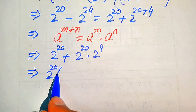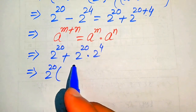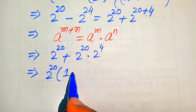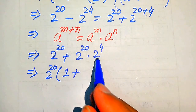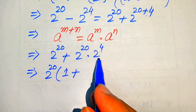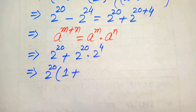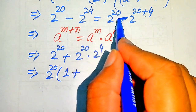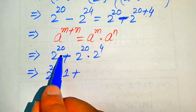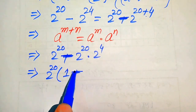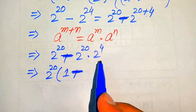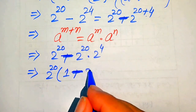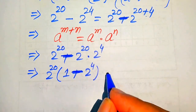We take common 2 to the power of 20 and get the remaining values. Note there is a negative sign here — this is a negative sign — and when we take common 2 to the power of 20 we get 2 to the power of 4 remaining.